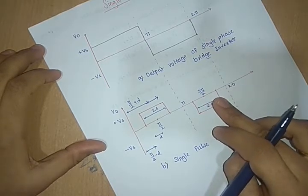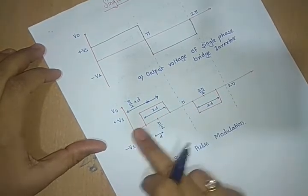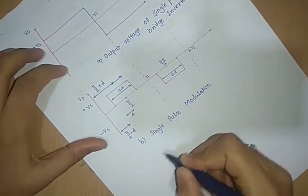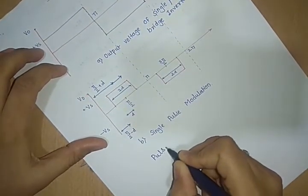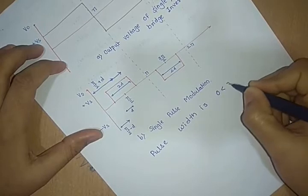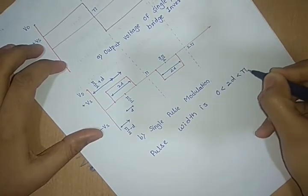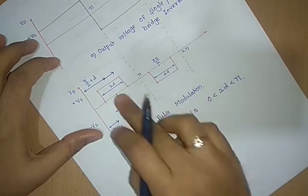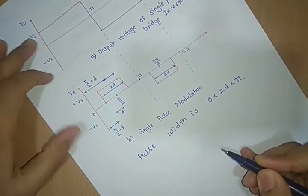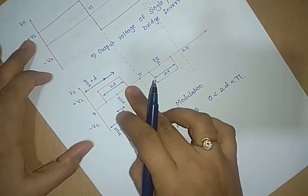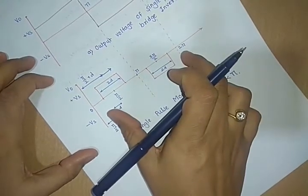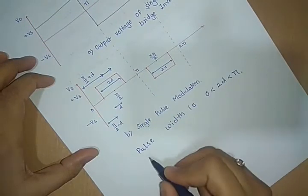The range of the pulse width 2d varies from 0 to pi. The output voltage is controlled by varying this pulse width 2d. The shape of the output voltage is known as the quasi-square wave.